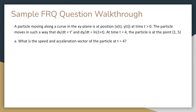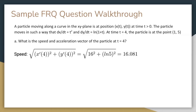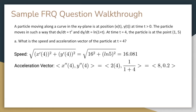Now let's walk through a sample FRQ problem. A particle moving along a curve in the xy plane is at position x of t comma y of t at time t greater than 0. The particle moves such that dx over dt equals t squared and dy over dt equals ln of (1 plus t). At time t equals 4, the particle is at the point (1, 5). Part A: What is the speed and acceleration vector of the particle at t equals 4? To determine the speed, you use the formula square root of vx squared plus vy squared. The velocities are just the derivatives of the positions with respect to time, and you're already given the derivatives in the problem. So you just plug in t equals 4 and get approximately 16.081. Remember to round to three decimal places. The acceleration vector is x double prime of t comma y double prime of t. So by differentiating the velocities and plugging in t equals 4, you get (8, 0.2).